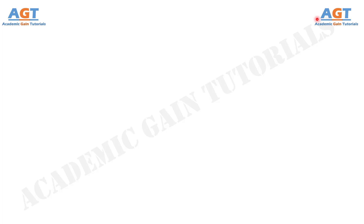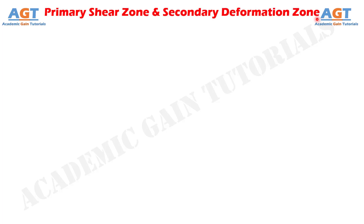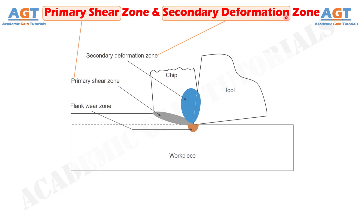Welcome to Academic Game Tutorials. In this video, we will look into the differences between primary shear zone and secondary deformation zone. Machining or metal cutting is one subtractive manufacturing process that indicates layer by layer material is gradually removed from the workpiece to impart desired shape, size and finish.